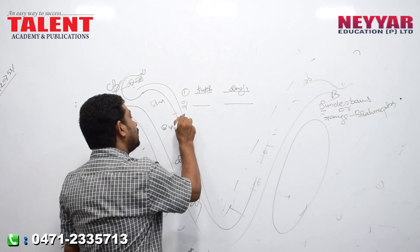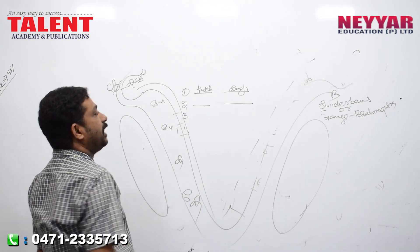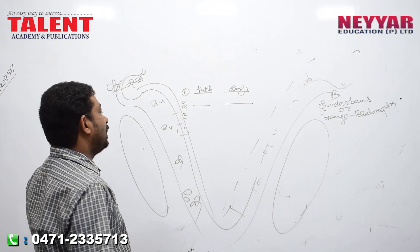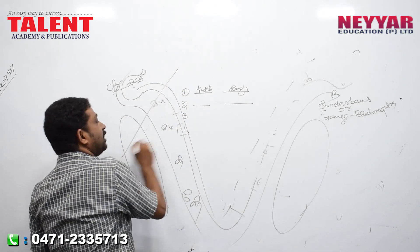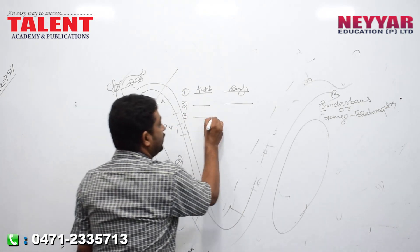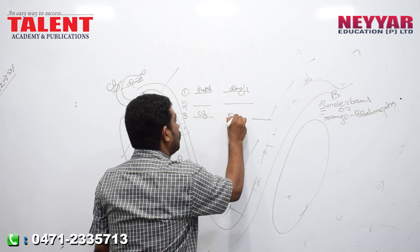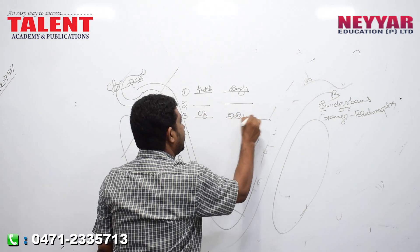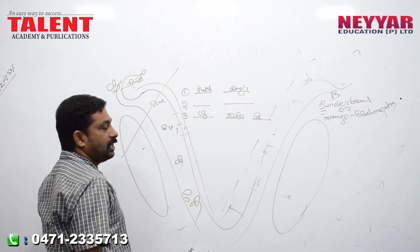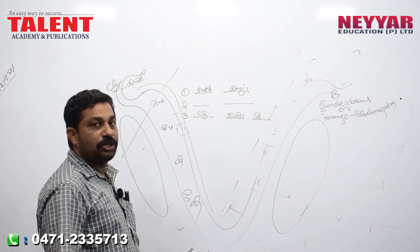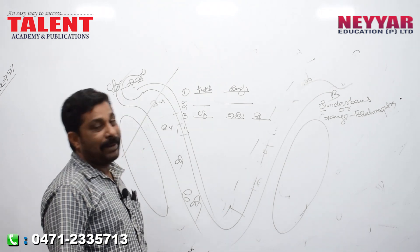The western coastal plain lies between the Arabians and is divided into three divisions. The first one is Gujarat Coast, the second one is Konkan Coast, and the third one is Malabar Coast.